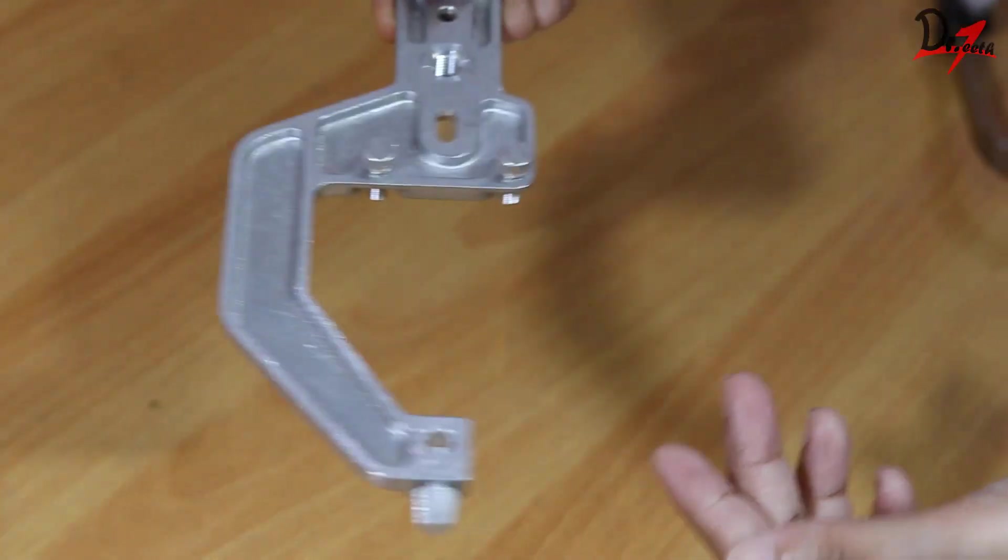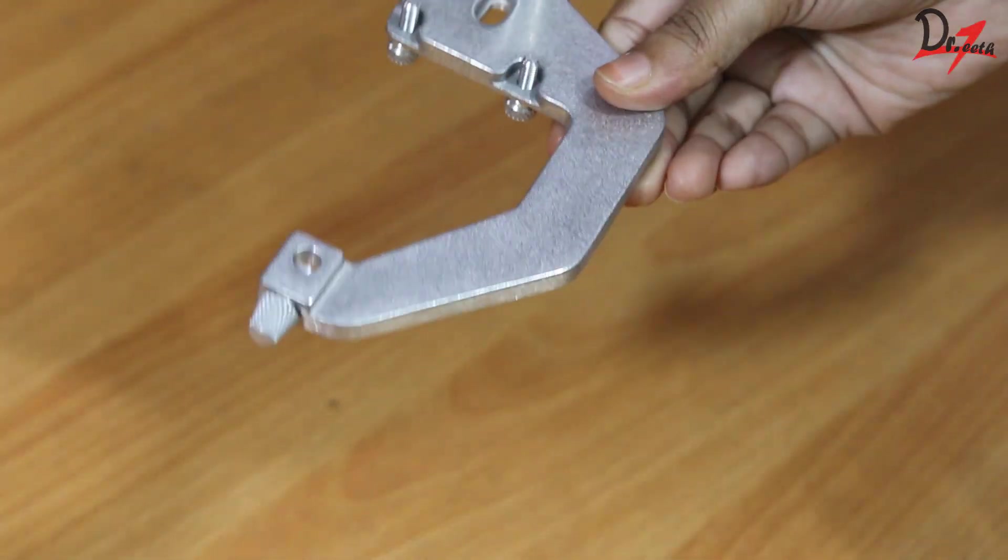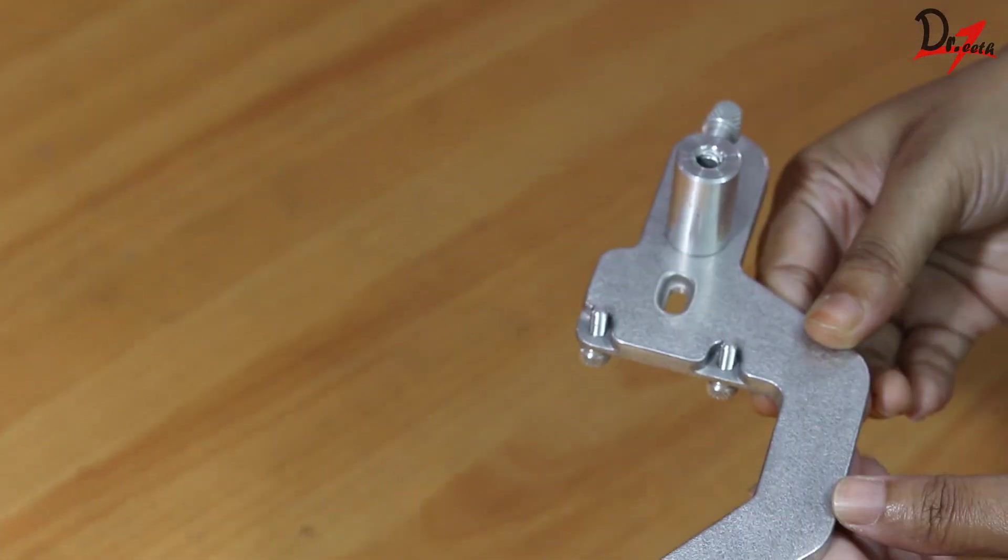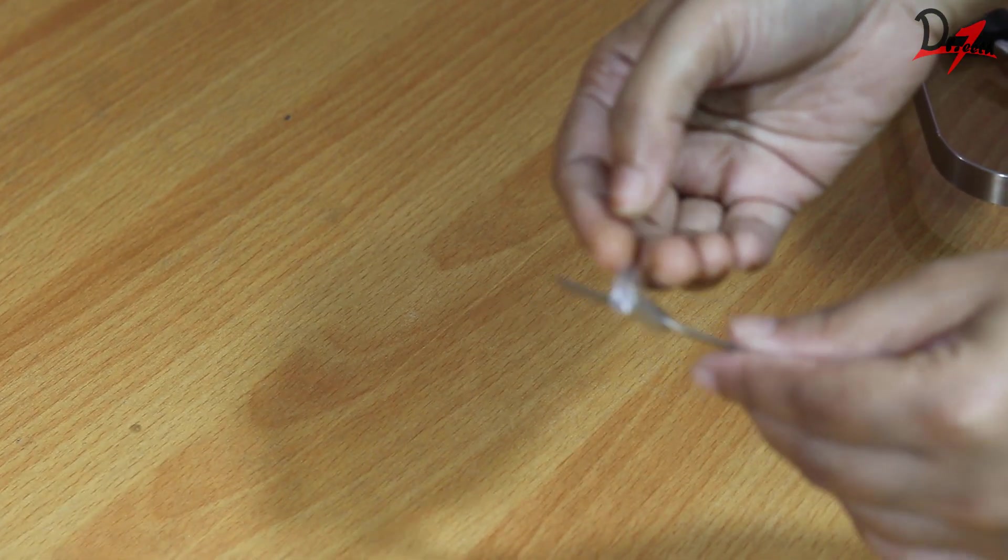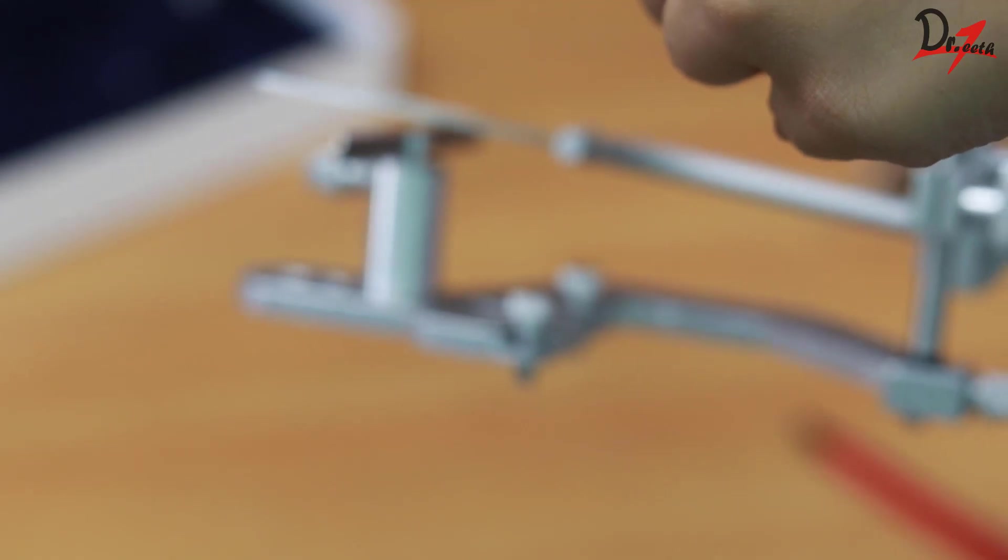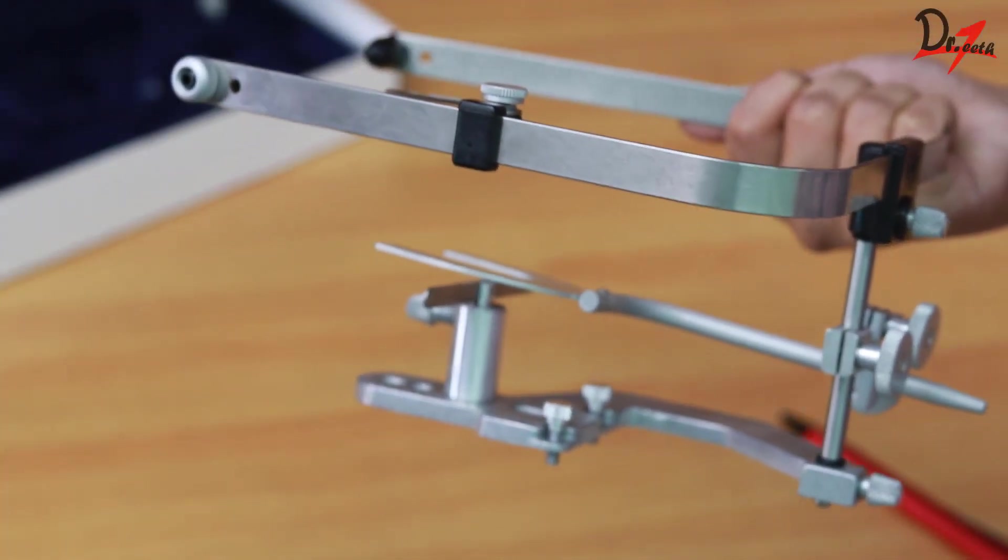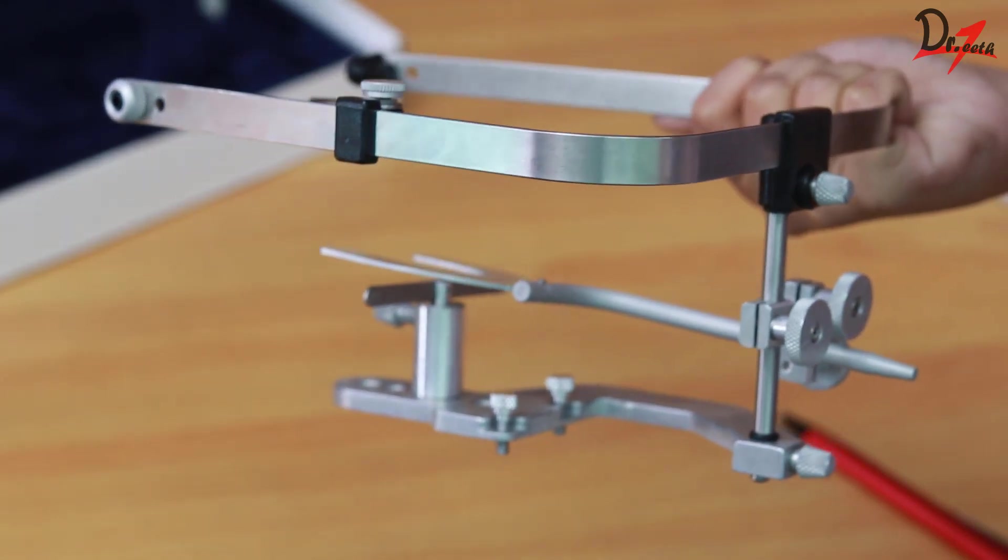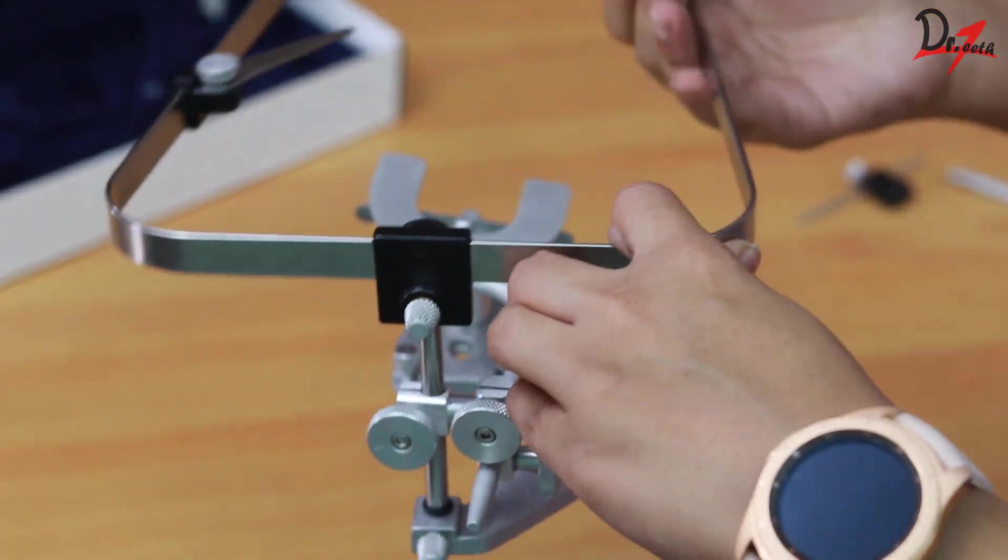So this is the mounting platform. We can see that we have this extension here, which will be used to attach the cast holder or the fork holder. As you can see, it can adjust itself according to the inclination of the cast. And also the height could be adjusted by using these screws here. So these were all the parts of the face bow.